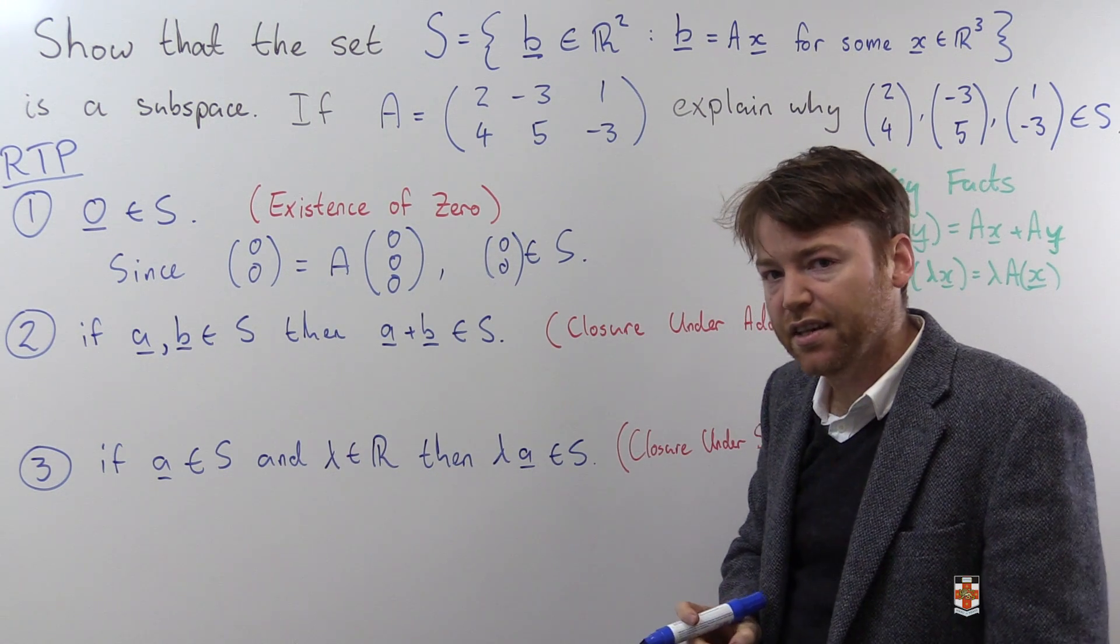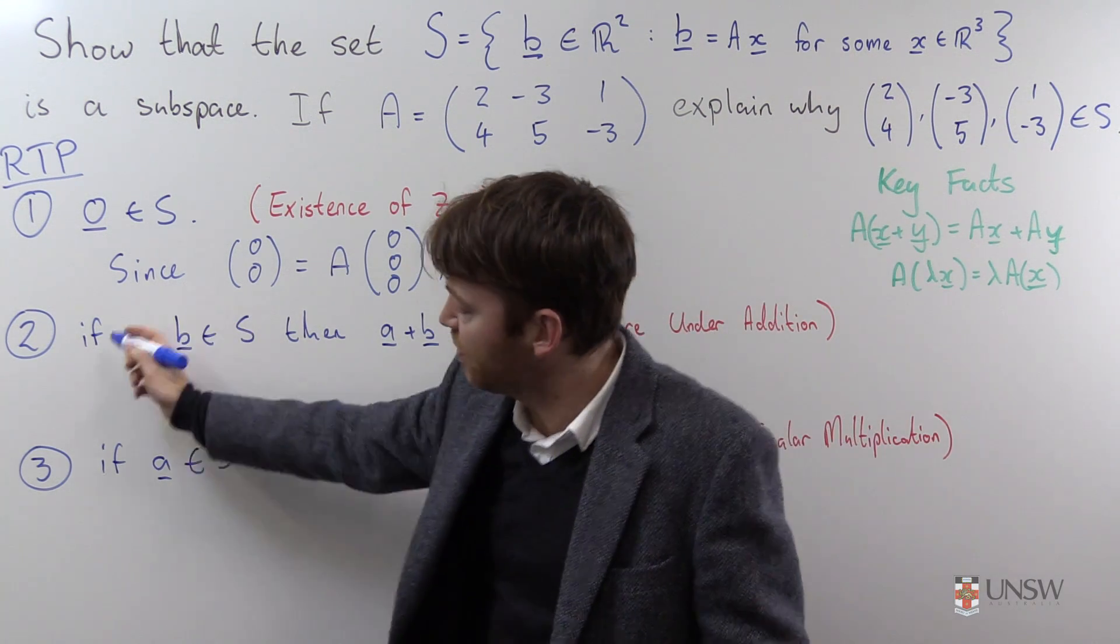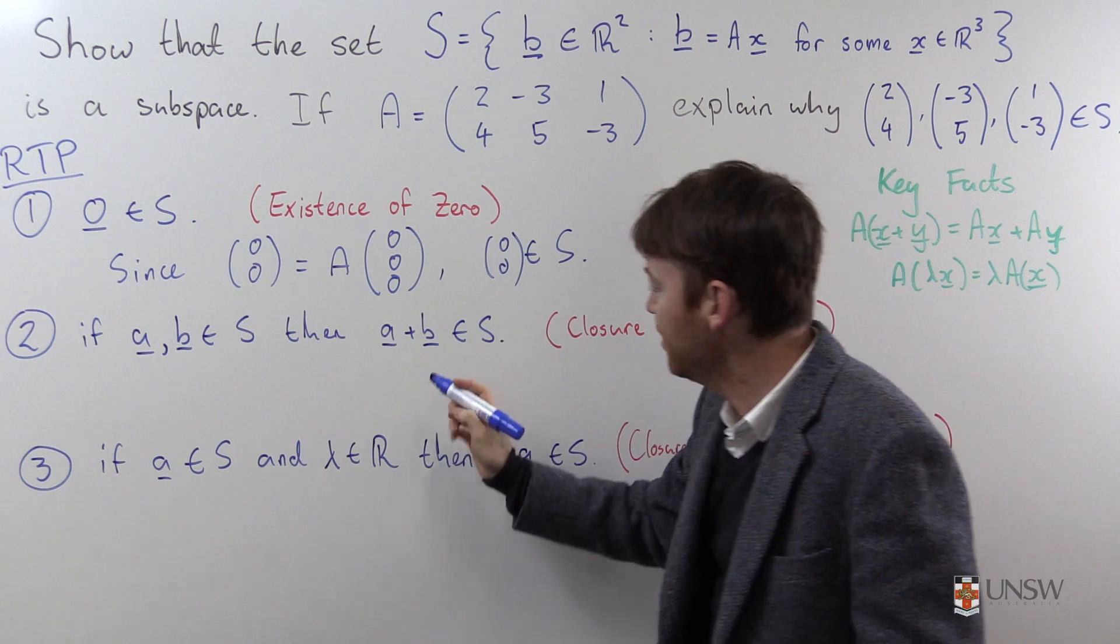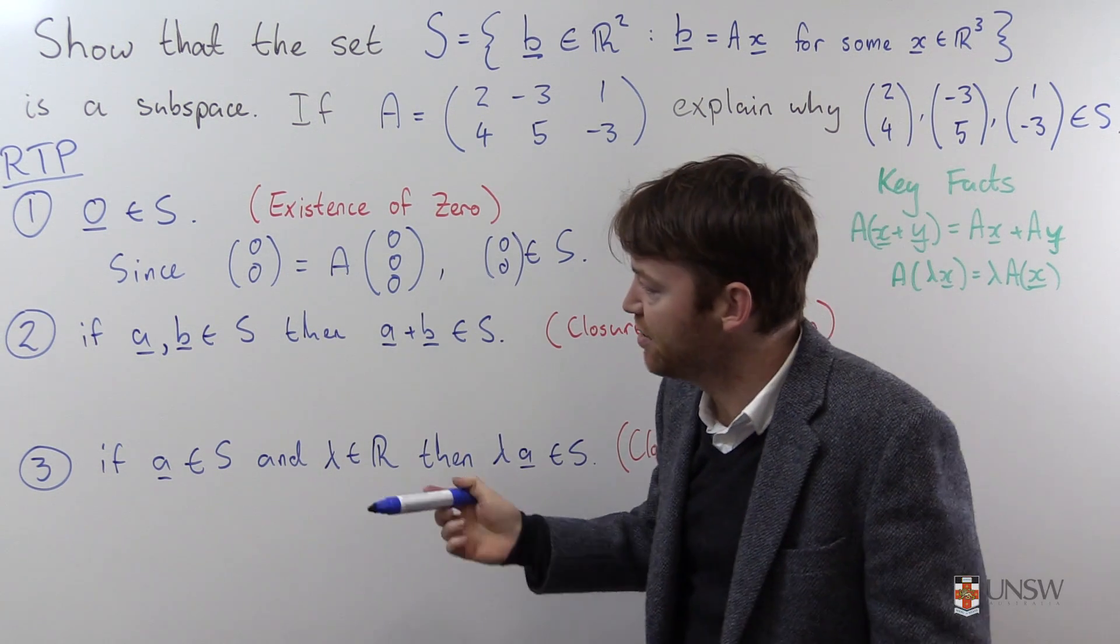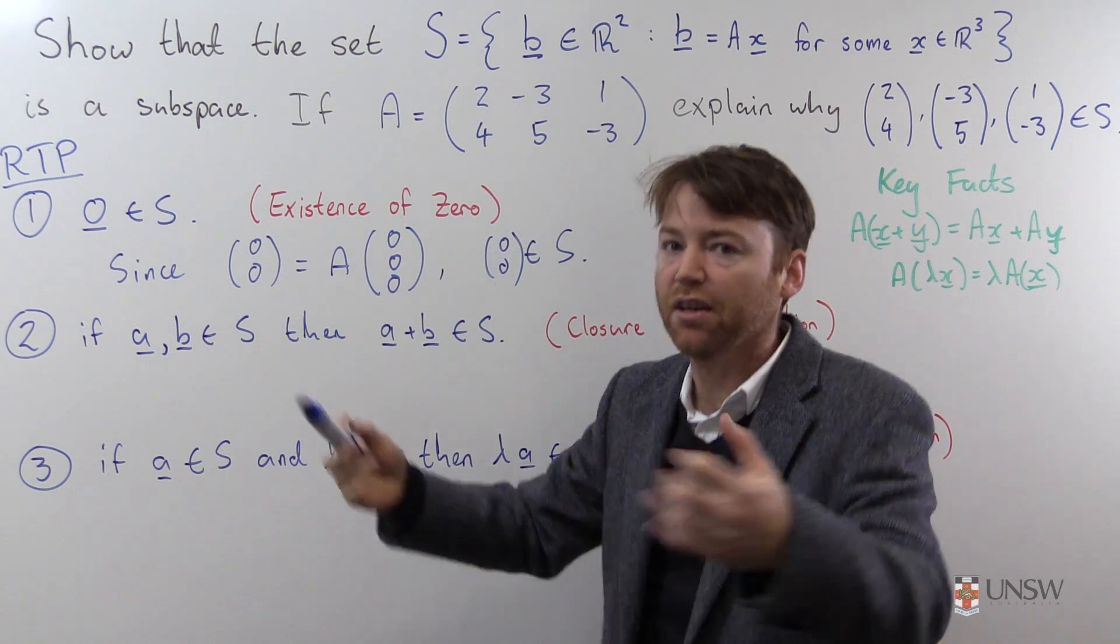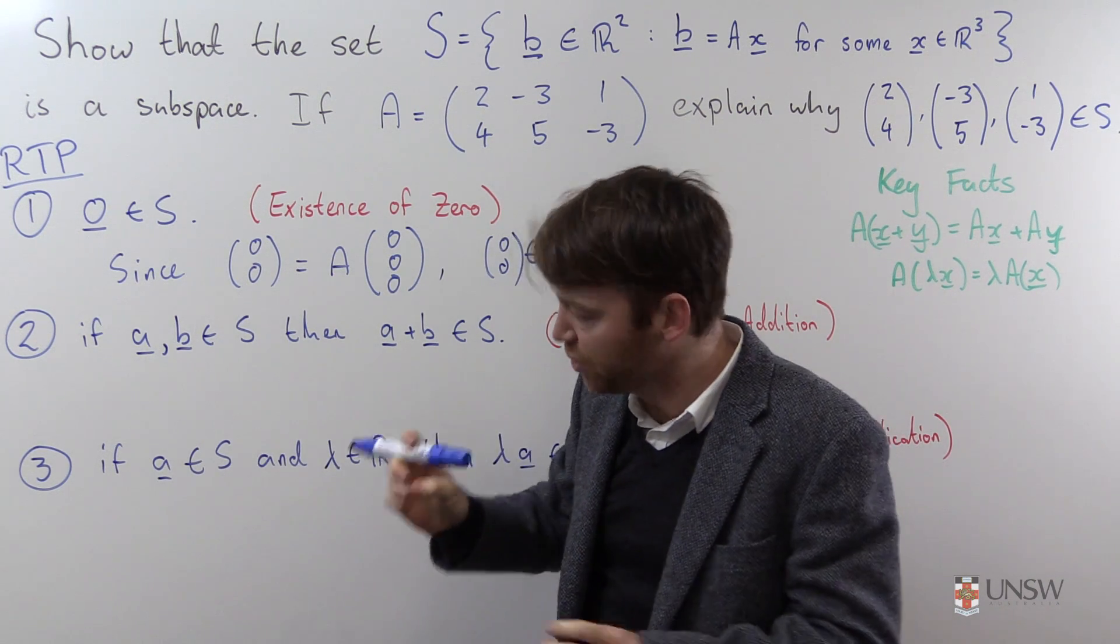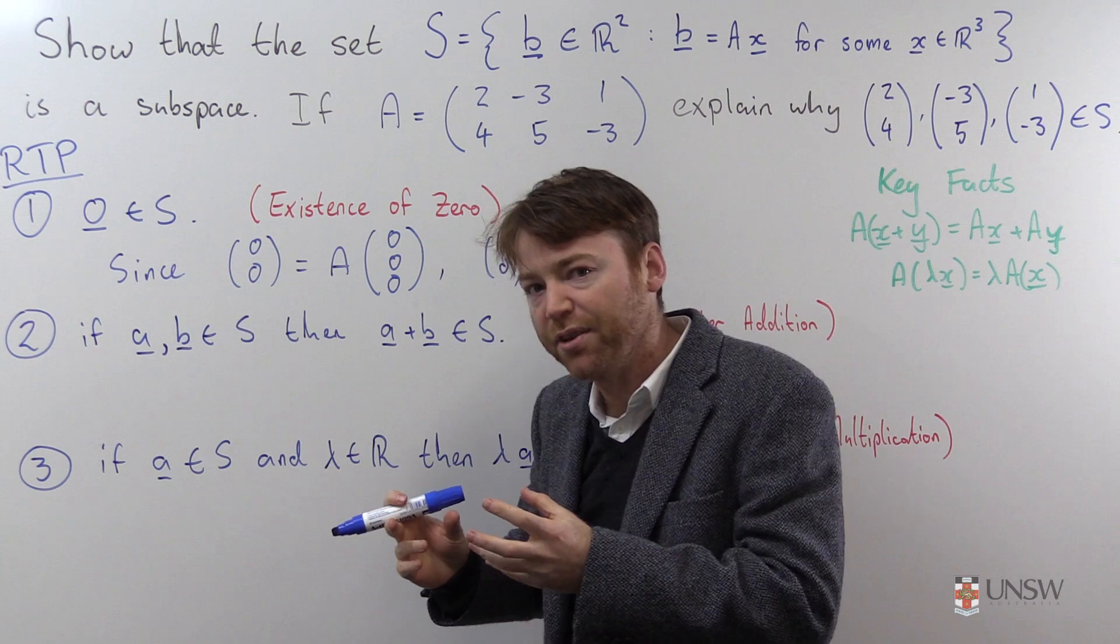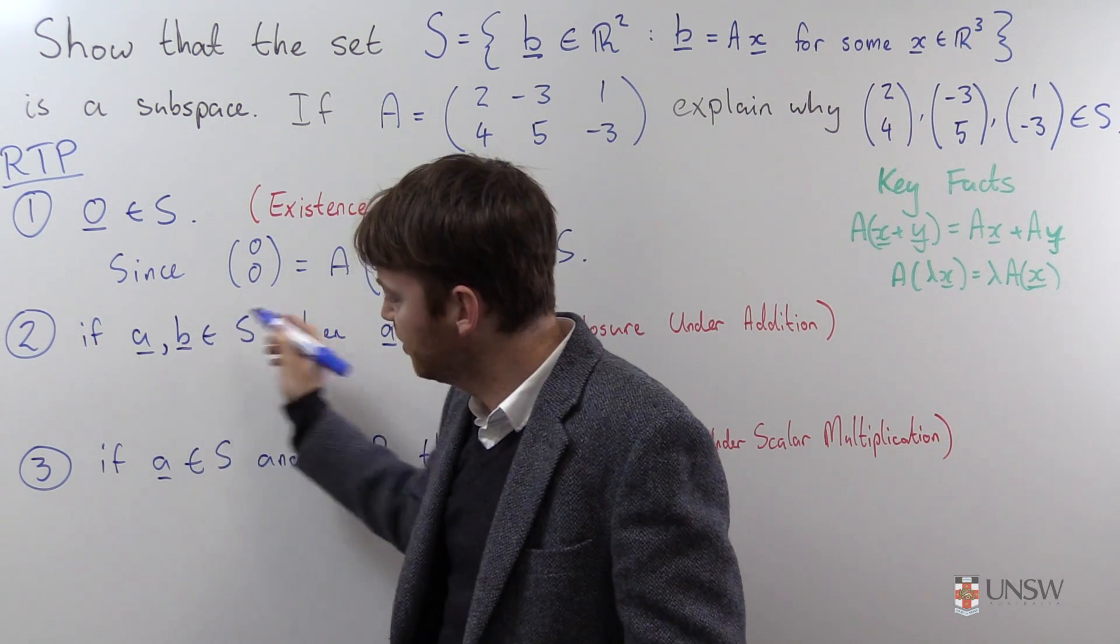The second thing we have to show is that S is closed under addition. What that means is if you take two elements from the set S, then their sum is in S. Somewhere along the way we're going to have to use the fact that these elements came from S. You can't just pick random vectors from the street. They need to be elements of the set S. And if you're not using the properties of S somewhere in this proof, then you're not doing it right.